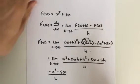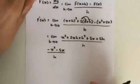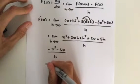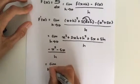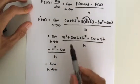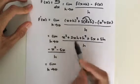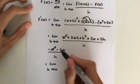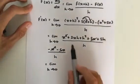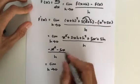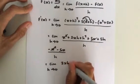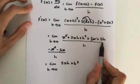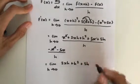So next, we're going to look for like terms so that they cancel. So we get the limit as h approaches 0. So, minus x squared and x squared cancel. The 5x and minus 5x cancel. So what we're left with is 2xh plus h squared and plus 5h, all divided by h.